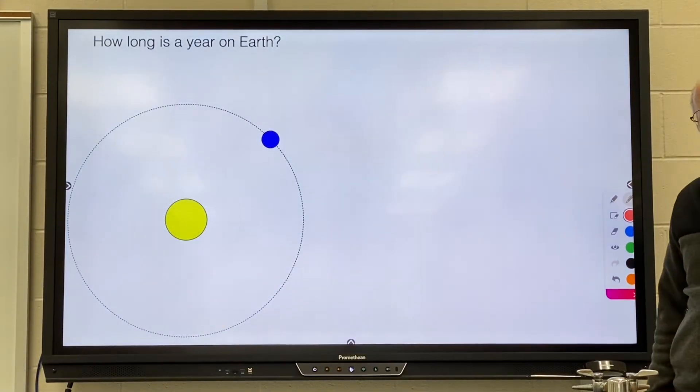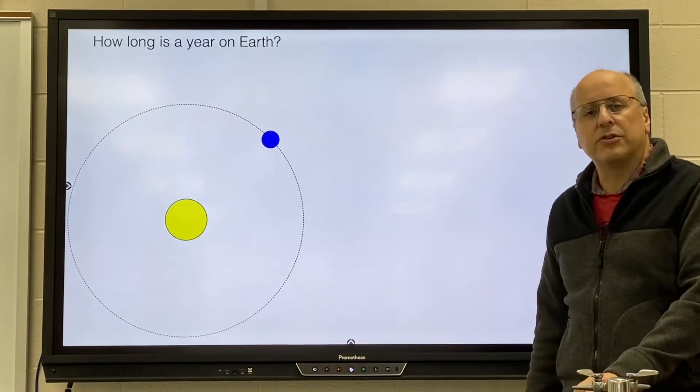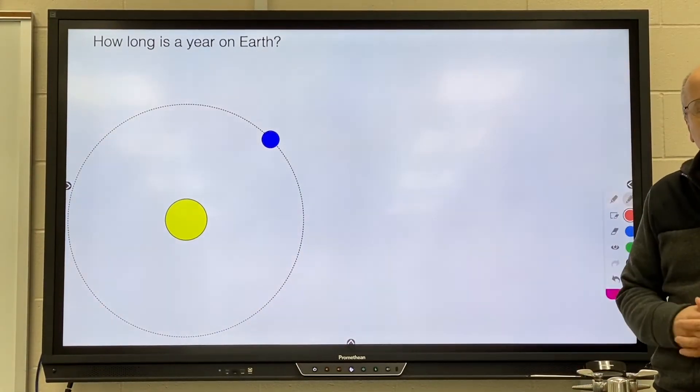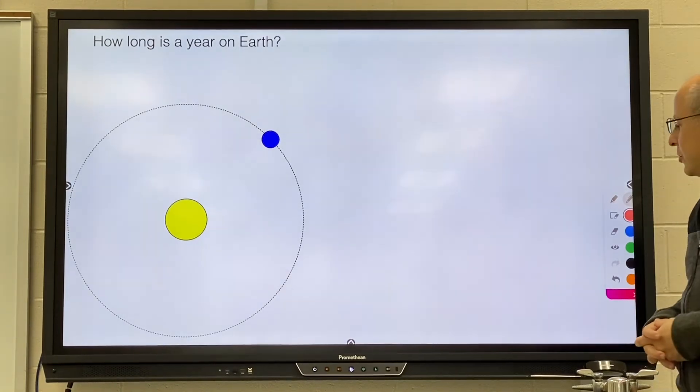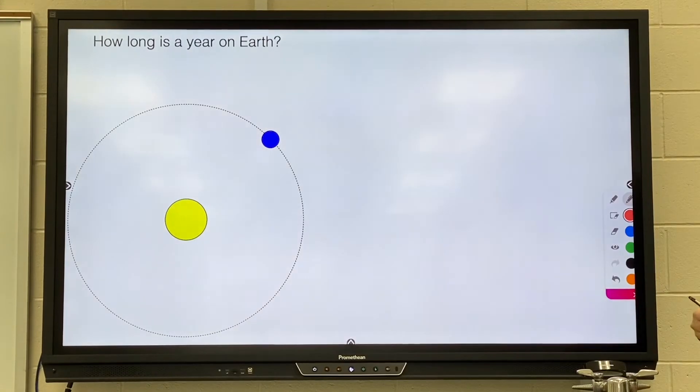I'd like you to test this by solving a problem that we already know the answer to, just so you can see how well all of these formulas fit together. What I'm going to ask you to do is calculate how long a year is on Earth, starting with first principles.